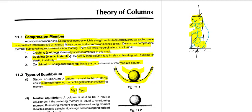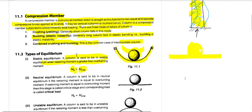Neutral equilibrium corresponds to a straight surface. If a column is moved and the restoring moment equals the overturning moment, then the column is said to be in neutral equilibrium.